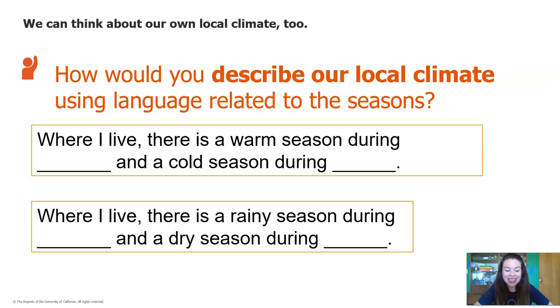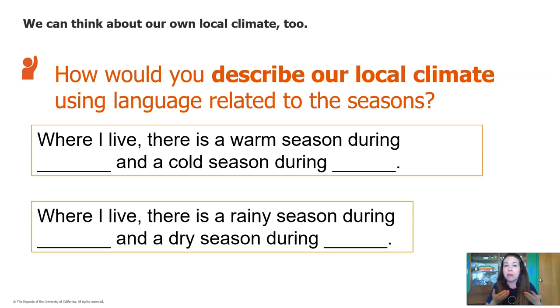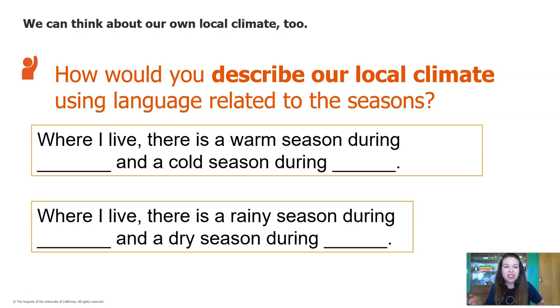Great. Now look at this next sentence stem: where I live, there is a rainy season during blank and a dry season during blank. What months would you use to fill in those blanks?